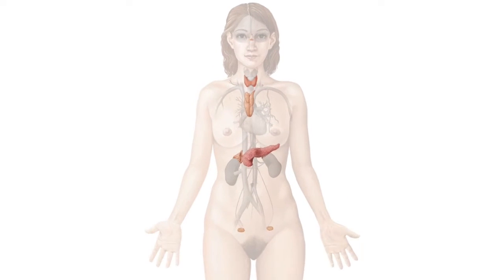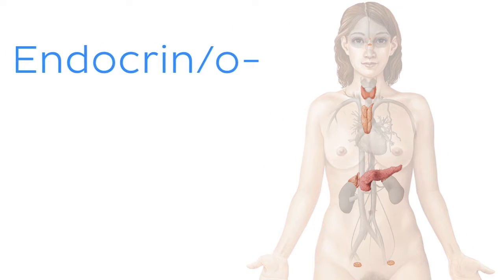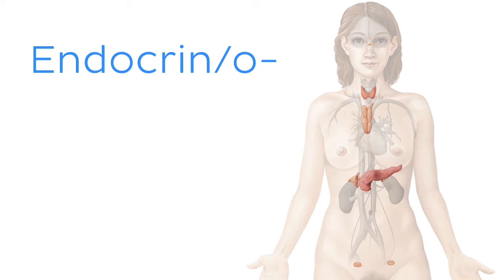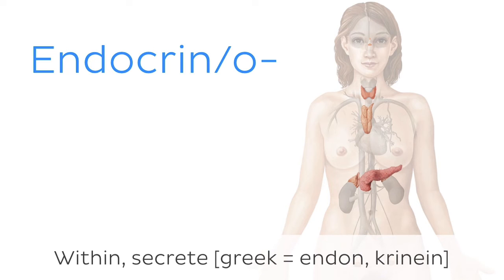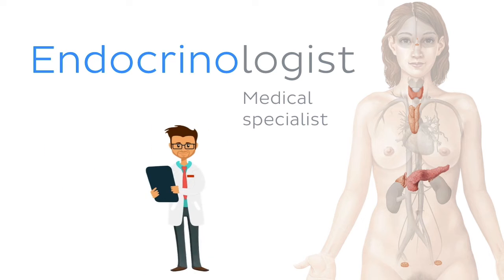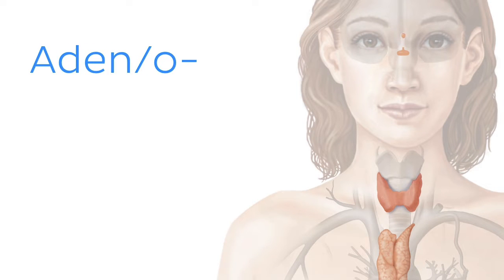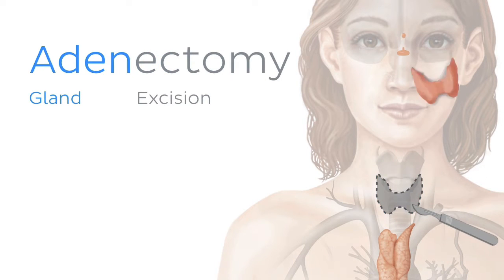If you've ever studied the endocrine system, you'll know there are two main elements to it: the endocrine glands and the hormones they secrete. So let's learn the roots associated with them, beginning first with endocrine or endocrino, which is the root for endocrine system or endocrine glands. It comes from the Greek endon, which means within, and crinine, to secrete. It is used in words like endocrinologist, a medical specialist concerned with the endocrine system. Aden or adeno is a general root referring to glands, and is used in terms like adenectomy, which is surgical excision of a gland.